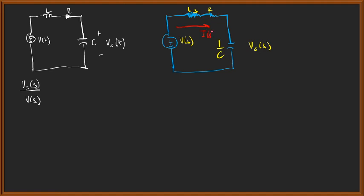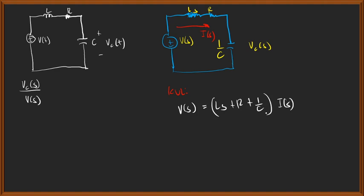Now we apply KVL. So V(s) is equal to all the impedances: Ls plus R plus 1/Cs, all times I(s). That is our equation from KVL. We then get the relationship I(s)/V(s) equal to 1 over (Ls + R + 1/Cs).